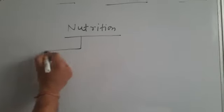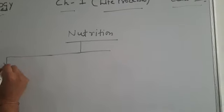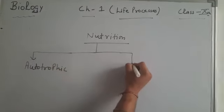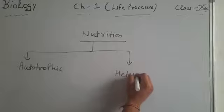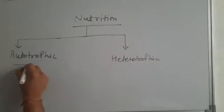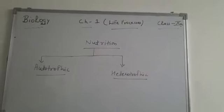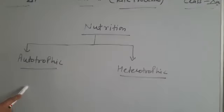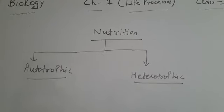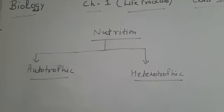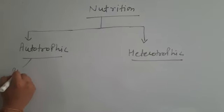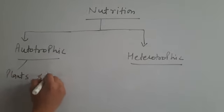Next we will discuss about what are the modes of nutrition. The first is autotrophic and the second is heterotrophic. In the autotrophic mode of nutrition, the organism makes their own food from simple inorganic material like carbon dioxide and water, present in their surroundings, with the help of sunlight. Examples of autotrophic nutrition are plants and a few bacteria.